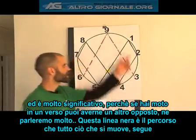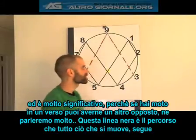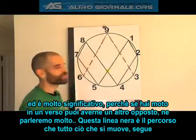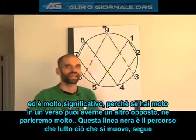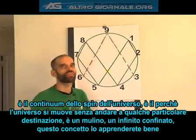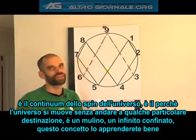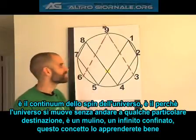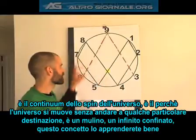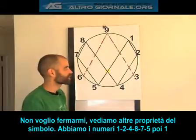Because when you have a motion in one way, you're going to have a trailing motion in another way. This black line that you're seeing here is the pathway that everything takes that moves in creation. It is the spin continuum that the universe is on. It's why the universe is always moving, but it's never actually going anywhere — it's on a treadmill. It's a bounded infinity, and you're going to get real familiar with that concept. It touches everything we're going to do.